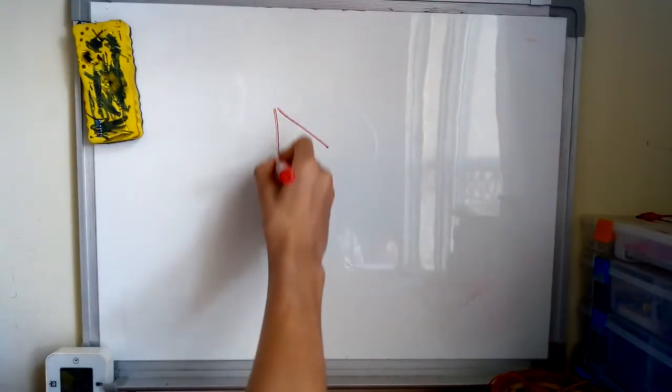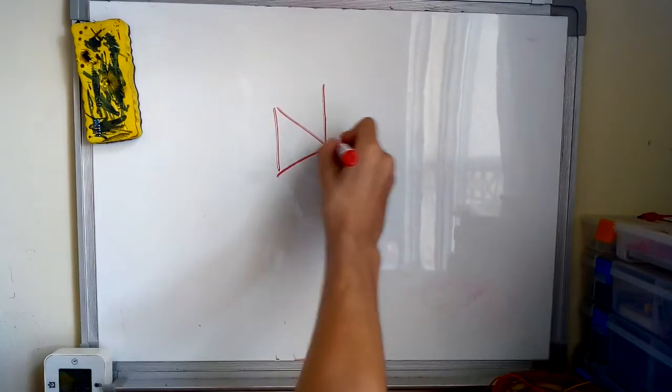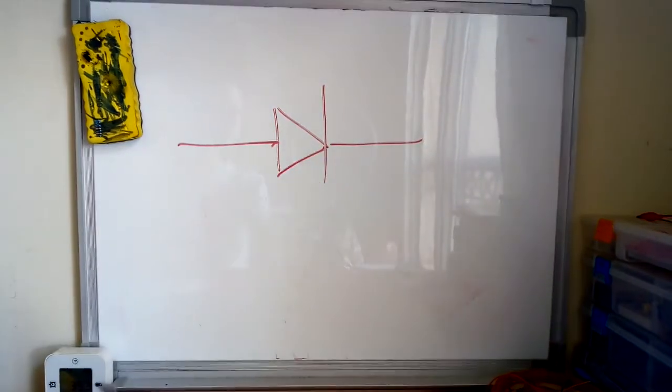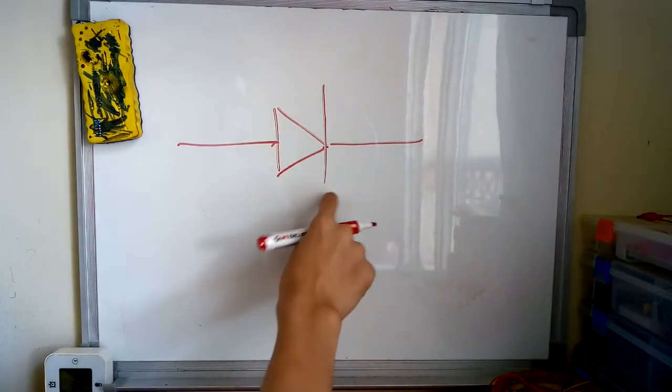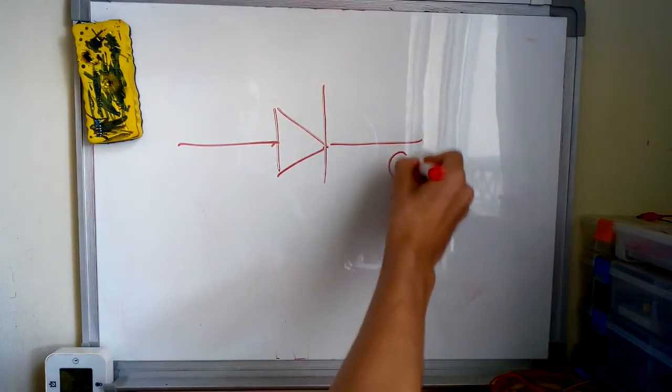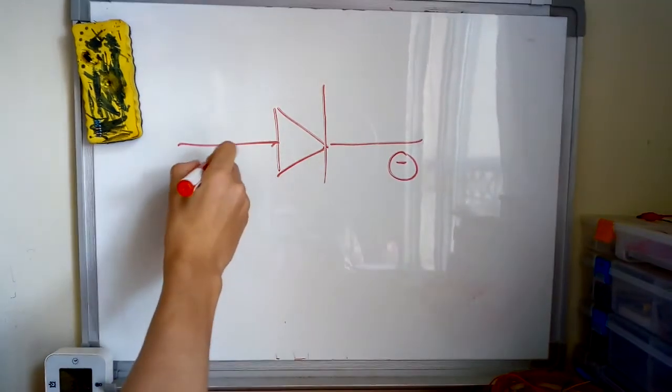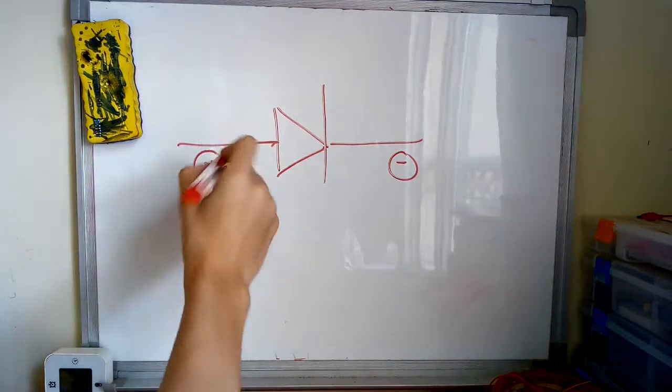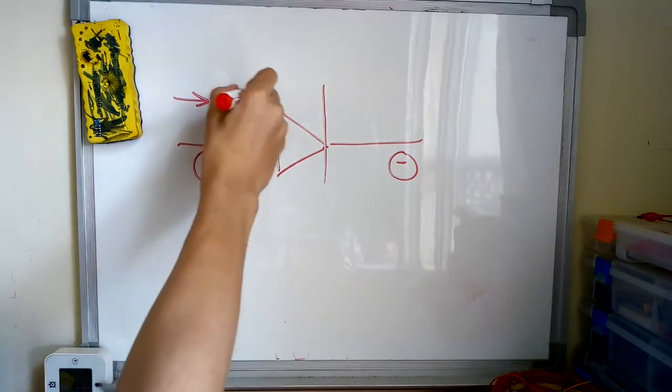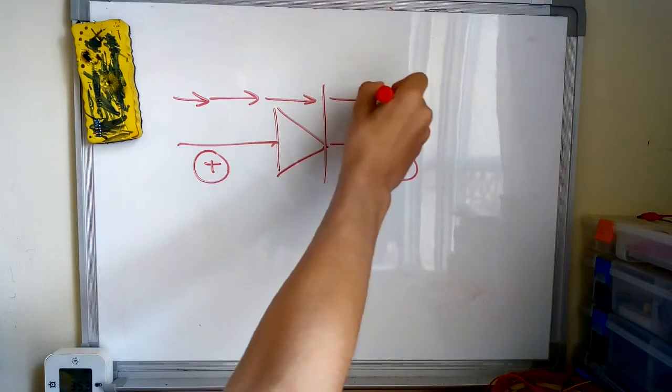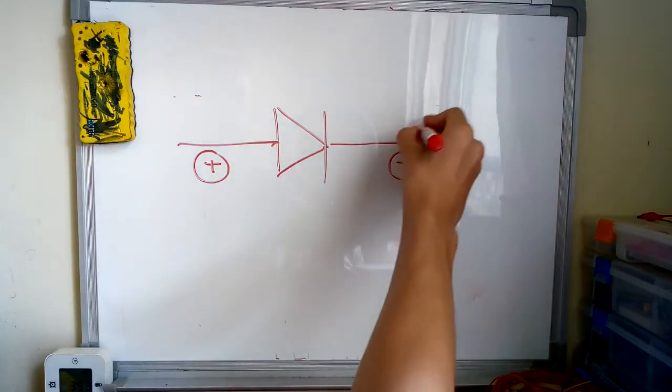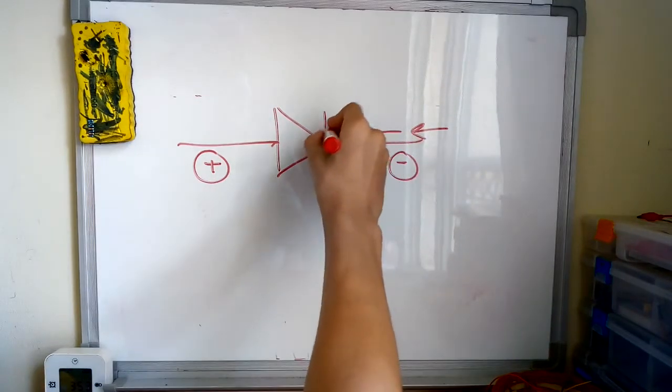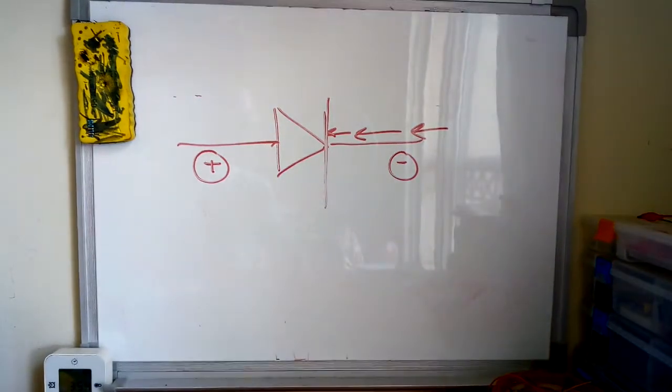To sum up, a diode is an electric device which passes the electric current in only one direction. And this is the symbol of a generic diode. The side which has this vertical line is the negative side, while the one which has an arrow pointing to the right is the positive side. Conventional current, which is the type of current, will flow alongside the arrow, but if reversed, it will be blocked and won't flow.